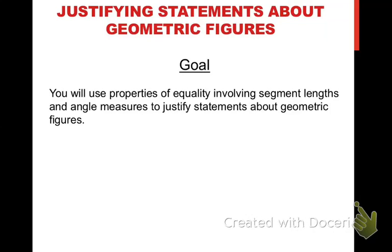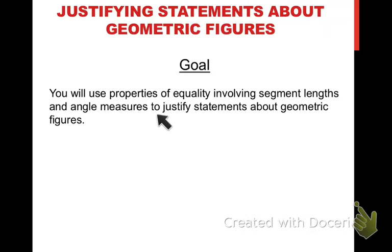We're going to back up what we've been doing with justifying statements about equations in order to now justify statements about geometric figures. In the previous video, we were looking at how you use properties of equality in order to justify the steps in the process of solving an equation. Now, we're still going to be working with properties of equality, but those properties are going to involve either segment lengths or angle measures, and we'll use them to justify statements about geometric figures.